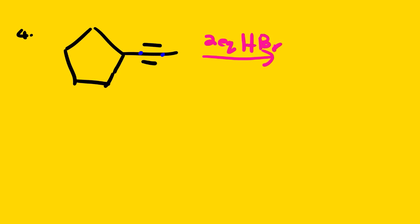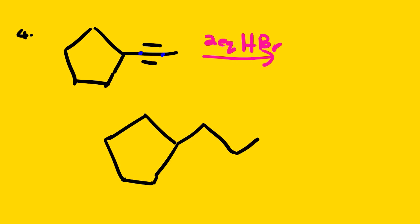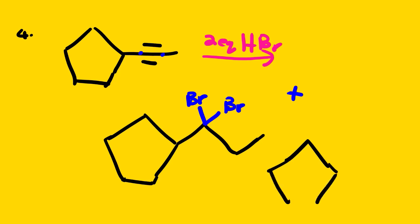Now with the very same example but two equivalents of HBr, we are going to have a mixture of two products. Since this is not a terminal alkyne — it's internal — we are going to have Br and Br here with no double bond, plus the second geminal product.